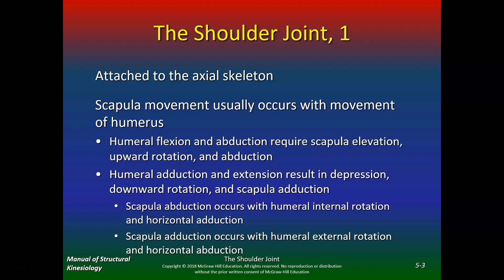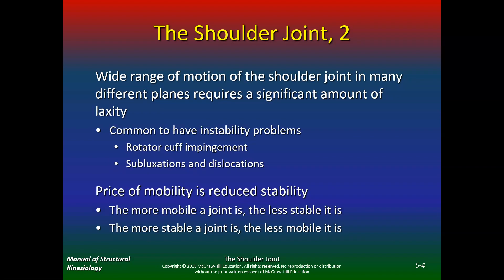Scapula abduction occurs with humeral internal rotation and horizontal adduction, where scapula adduction occurs with humeral external rotation and horizontal abduction. You can see how close the shoulder girdle and the shoulder joint are — one cannot function properly without the other. A wide range of motion requires a significant amount of laxity, making instability problems very common.